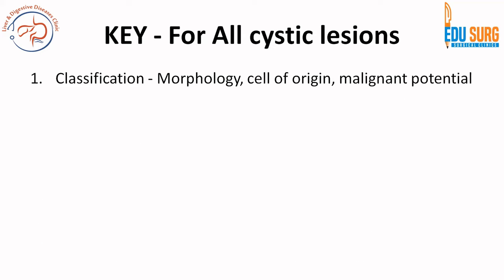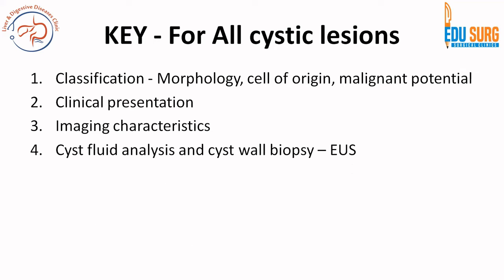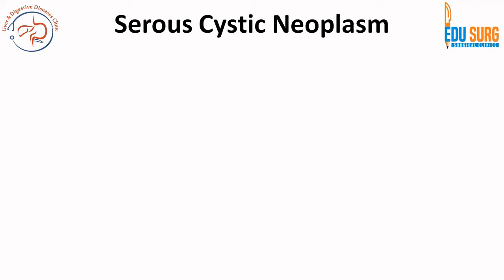Whenever we discuss cystic lesions of pancreas, the important points you need to remember for all of them: first is the classification, which we have already seen. Second is the clinical presentation. Then you look at the imaging characteristics — we have seen some points like microcystic, multilocular and so on. Then you look at the cyst fluid analysis and cyst wall biopsy, which is endoscopic ultrasound-based currently — whether it is required for a particular cystic lesion, and if so, what are the findings. Then you arrive at the treatment plan. Keep all these points in mind when we discuss common cystic neoplasms.